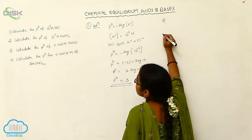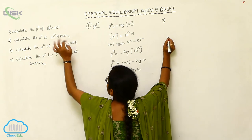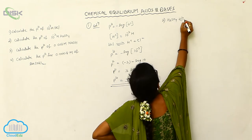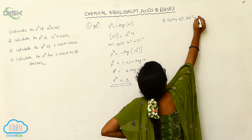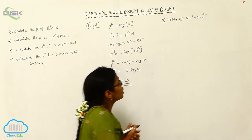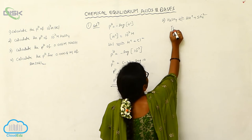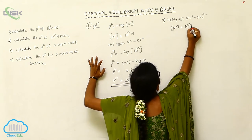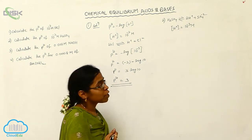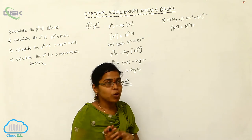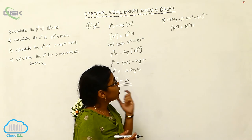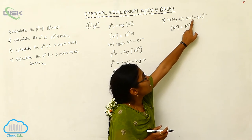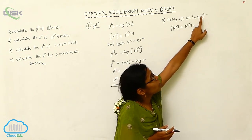Problem 2: calculate the pH of H₂SO₄. H₂SO₄ undergoes dissociation to form 2H⁺ and SO₄²⁻. The given H⁺ ion concentration is 10⁻³ M, but here there are 2 H⁺ ions. The valency of H⁺ is 2 — two H⁺ ions neutralize the −2 charge of the sulfate ion. So we account for the valency.